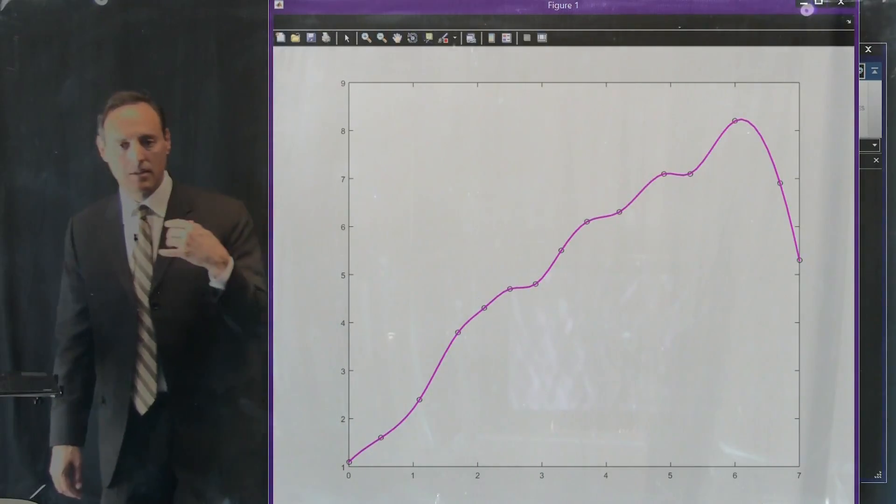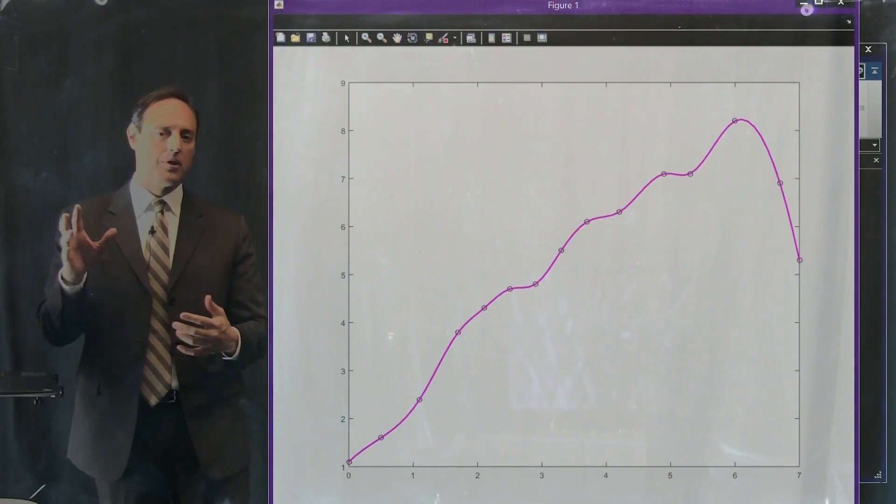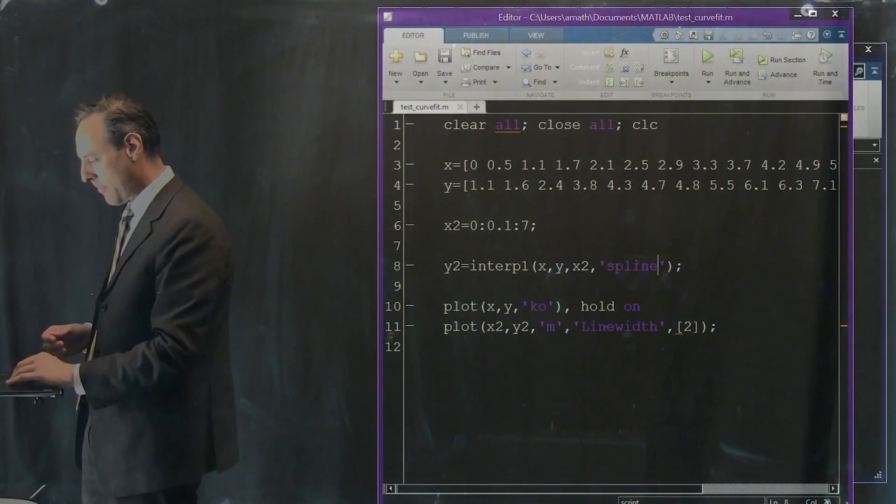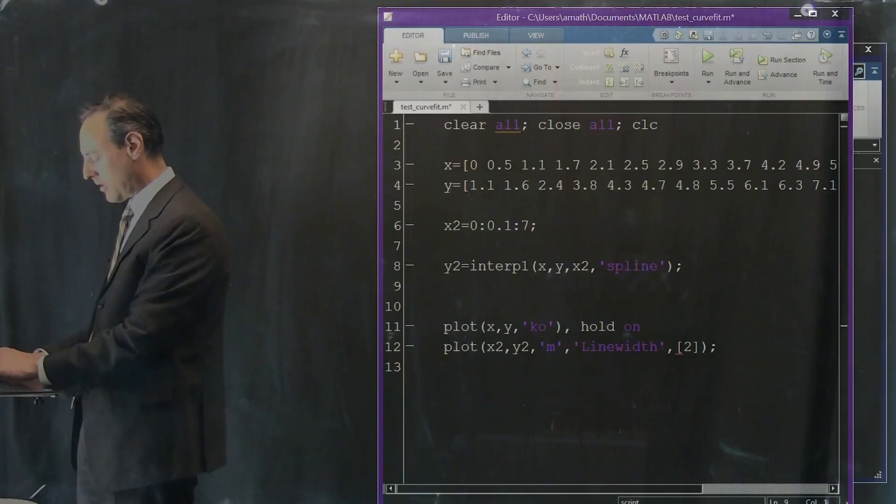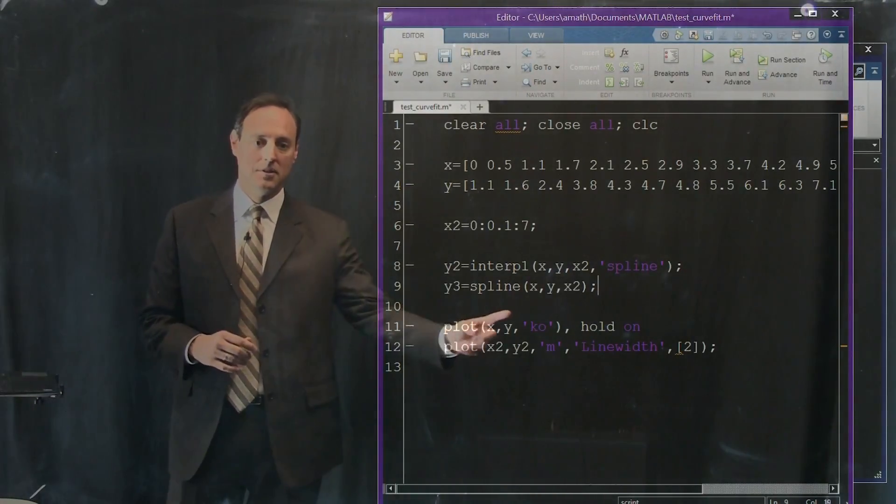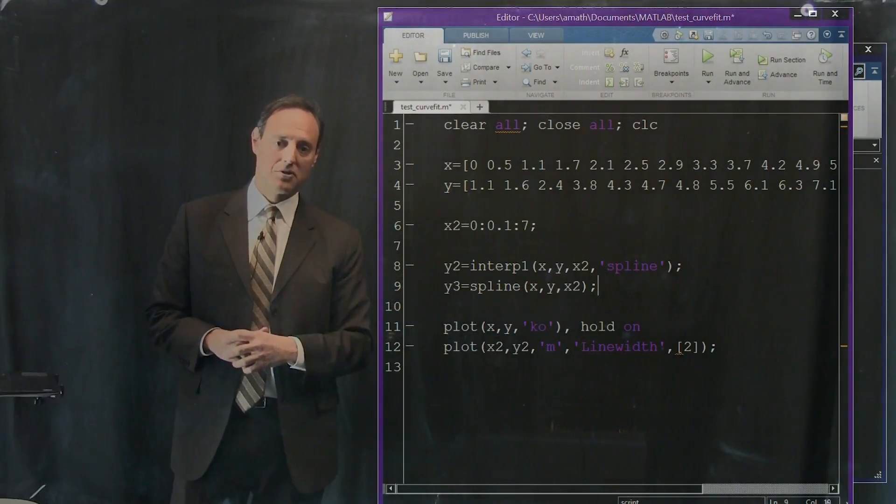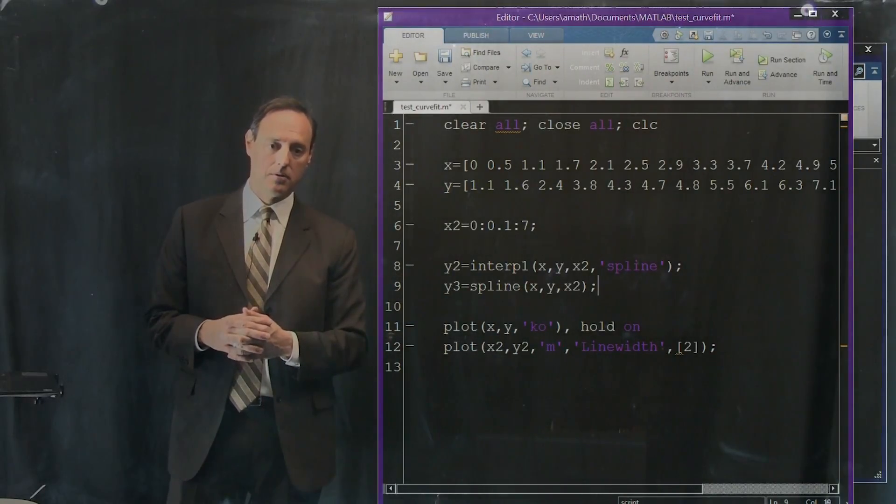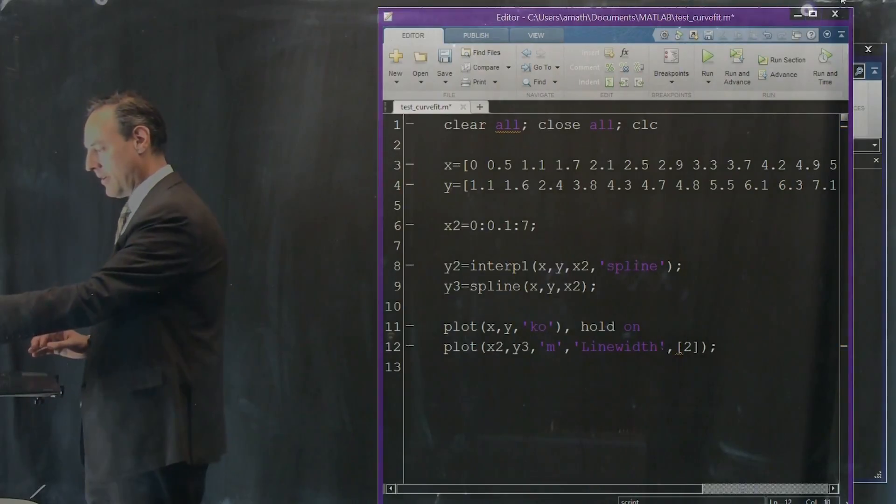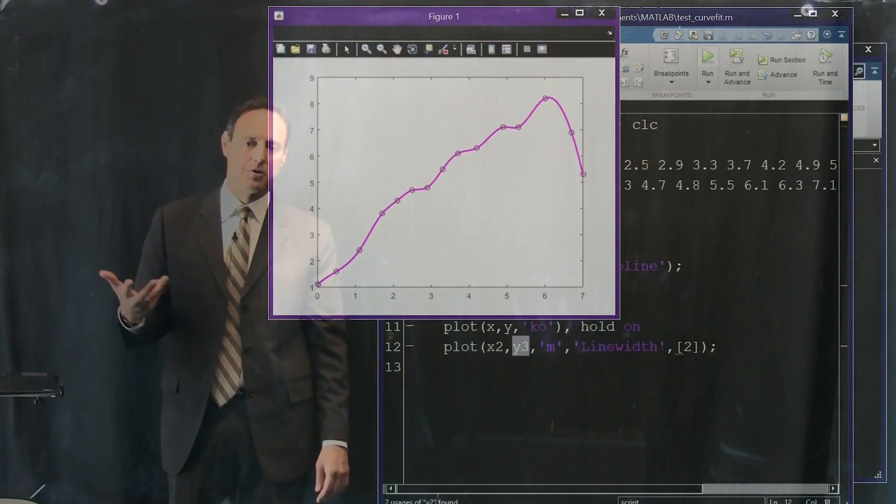By the way, the spline command can be either accessed directly with interp1 by having this as an option. The other possibility with a spline is spline x, y, x2. So spline, here's your data, give me values at all the x2, interpolated values at all the x2. So that's how that spline would work. Let's just verify for ourselves that it in fact gives you the same thing. There it is, and there's the spline.